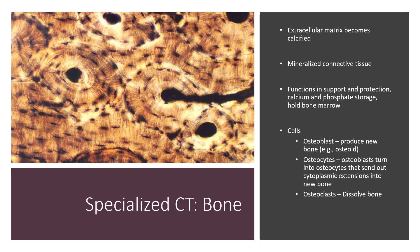Bone is the next type of specialized connective tissue. The extracellular matrix of bone becomes calcified. Unlike cartilage, bone is mineralized connective tissue that functions in support and protection, as well as calcium and phosphate storage. Bone marrow is held in bone. The cells of bone tissue include osteoblasts, which produce new bone (the osteoid); osteocytes, which are mature osteoblasts that send cytoplasmic extensions into the bone through canaliculi; and osteoclasts, which dissolve bone.